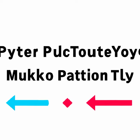Now that we know the benefits of automating your video uploads, let's take a look at the steps you need to take in order to set up the process. First, you will need to obtain an API key from YouTube. This key will allow you to access the YouTube API, which will be necessary for you to use the Python code to automate the upload process. Once you have obtained the API key, you will need to create a Python script that will use the YouTube API to upload your videos. Finally, once you have created the Python script, you will need to run it in order to upload your videos. You can do this by running the script from the command line, or by using a task scheduler such as cron to automate the process.